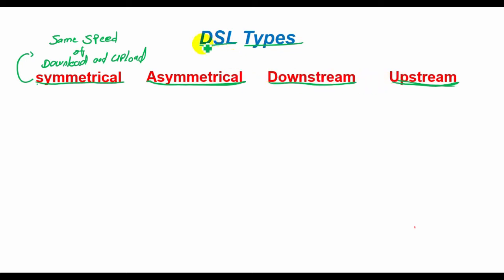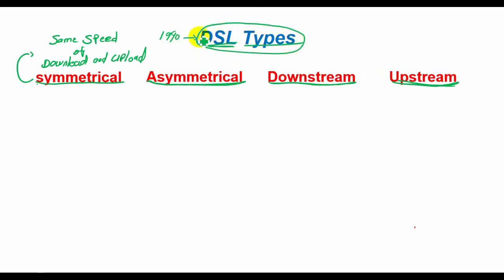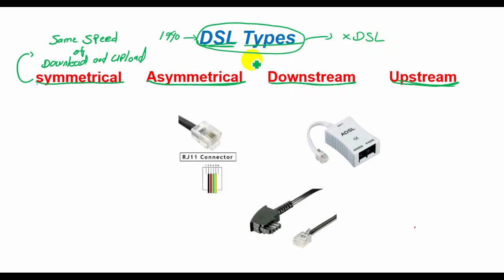DSL arrived on the scene in the late 1990s and it has had different types since then. Together, all these variations are known as xDSL. Let's talk about the different types of DSL.